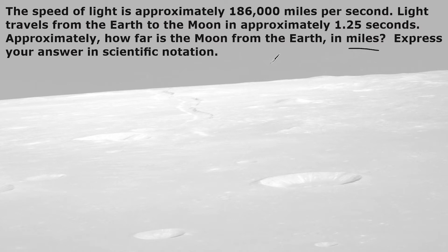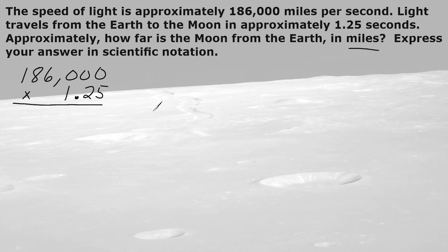We have two options here. We can start by just multiplying 186,000 by 1.25 and then take that answer, which would be in standard form, and convert it to scientific notation. Or we can convert this value to scientific notation first and then multiply the coefficient by 1.25. Let's set both of these problems up each way.